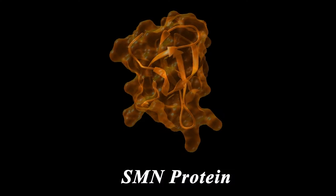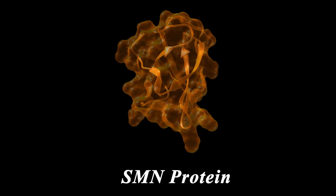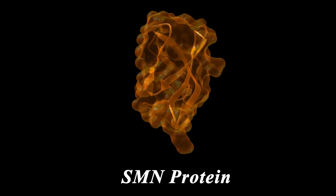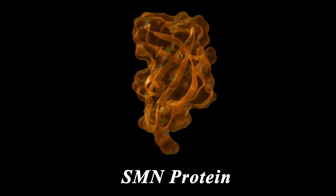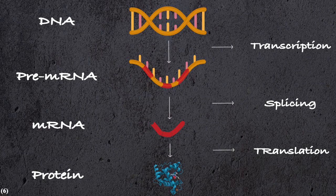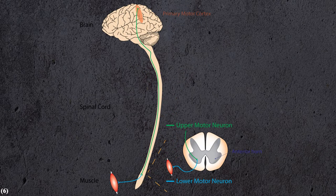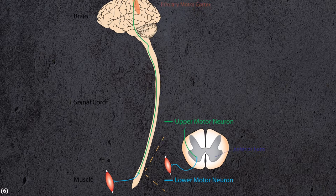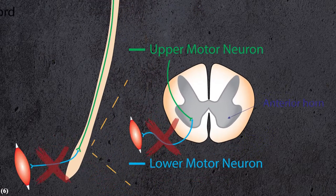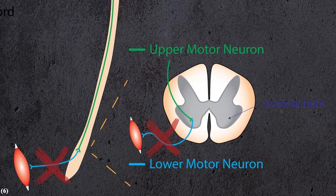One of the proteins involved in making the snRNP in the cells is called the survival of motor neuron protein, or SMN. Without it, the spliceosome doesn't work properly, and obviously splicing and making functional proteins can't happen properly in the cells. Without proteins, our cells can't develop and function in our body, and gradually the cells — especially motor neuron cells — die in the anterior horn of the spinal cord.